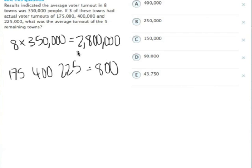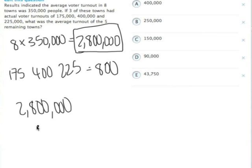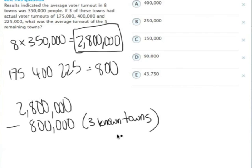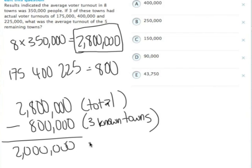We can subtract the 800,000 from that total population or total voter turnout that we had before. Just to spell this out more explicitly, 2,800,000 minus 800,000, which is the 3 known towns total, equals a flat 2 million in the 5 other towns.